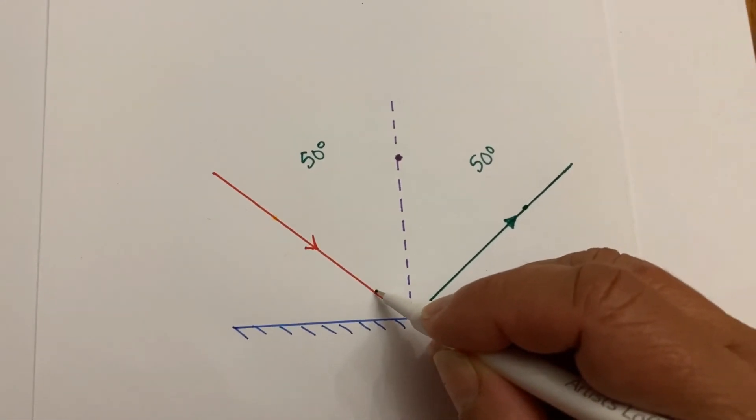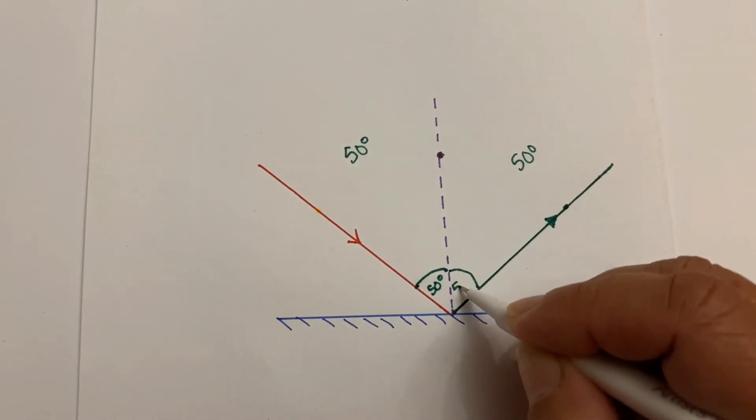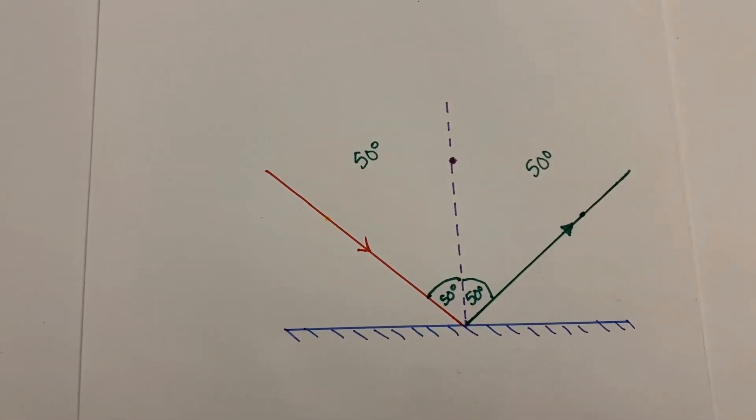Last thing is you just want to mark your angle. So we're going to put a little thing here, 50 degrees, draw another one here, 50 degrees, and then we are done.